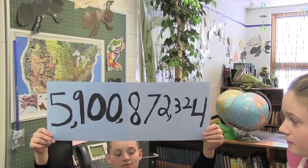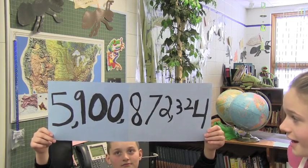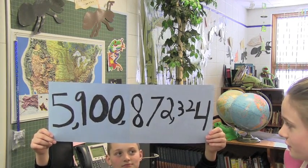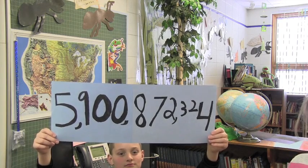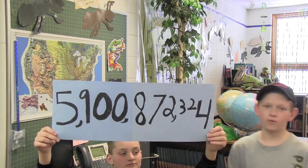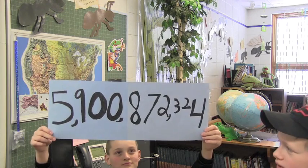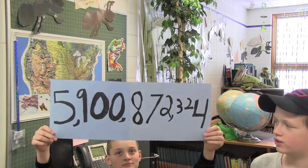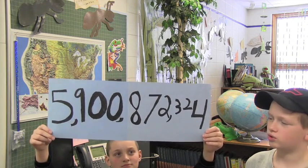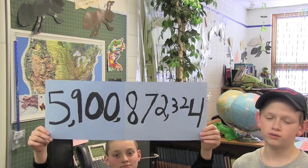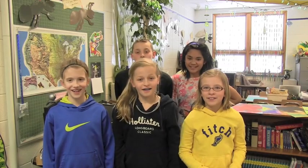What about 5,900,872,324? Four is an even number, so 5,900,872,324 is divisible by two.